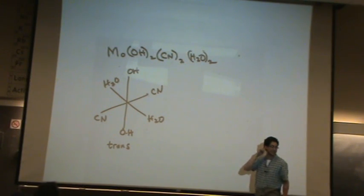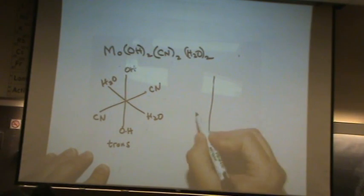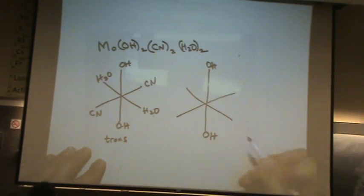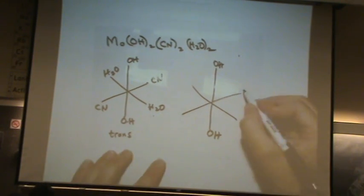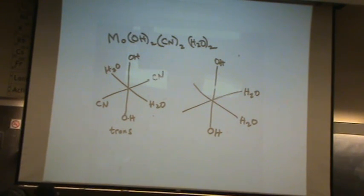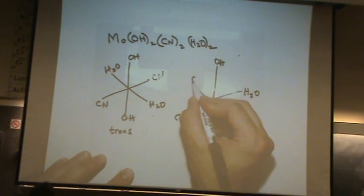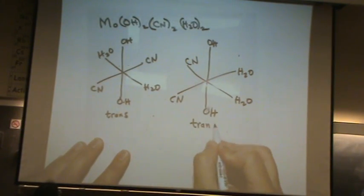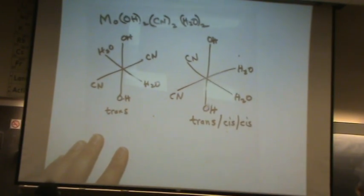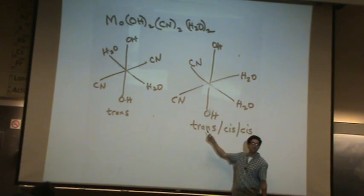Now I'm going to start making them cis. I'm going to try keeping the OH where it is. Remember, molybdenum's in the middle, I'm just not writing it. If I make the water cis, that will force the cyanide to be cis. Now we have a trans, cis, cis. Meaning that water is cis, cyano is cis, and the hydroxide is trans.